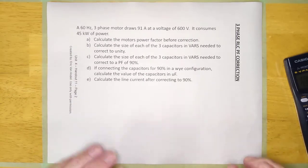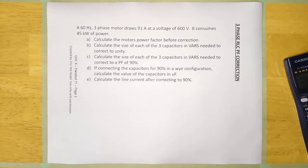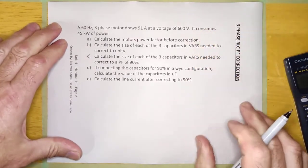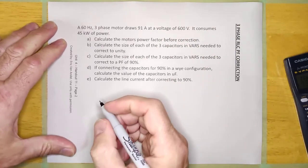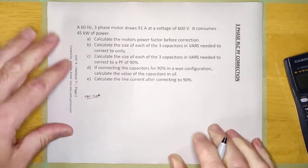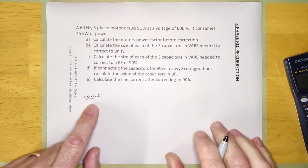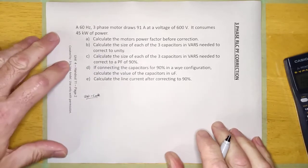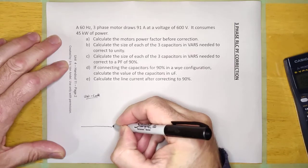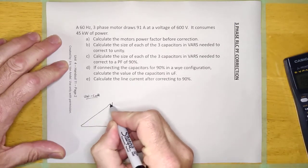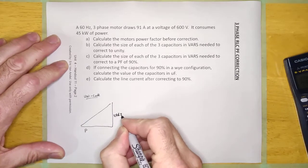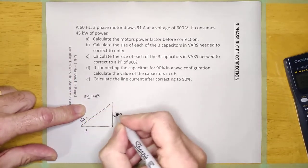Don't sweat it, guys. You can do this. You already know how to do this. When I have a power factor correction question, I must start with an uncorrected power phasor diagram — you're always going to start with one. It's going to look like every other power phasor diagram you've ever drawn: three sides — the power here, the VARs here, and the VA here.